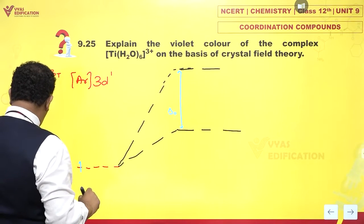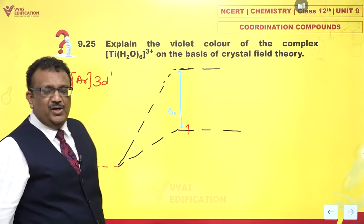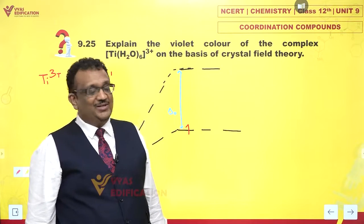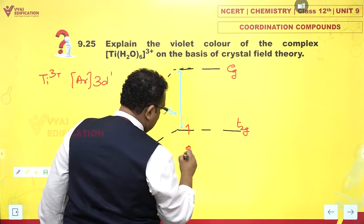And in the excited state, after complex formation, this electron goes here. It is a simple, beautiful d^1 complex. And this is the ground state.